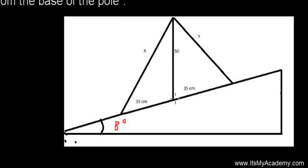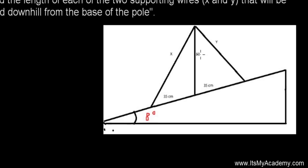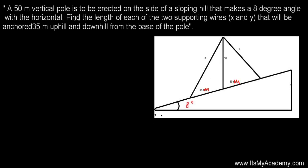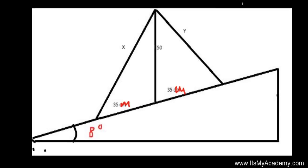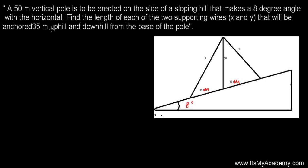We're going to erect a tower — a vertical pole of 50 meters. We need to find the length of each of the two supporting wires X and Y, which will be anchored 35 meters uphill and downhill from the base of the pole. So this is 35 meters and this is also 35 meters. We need to find out the length of X and Y.